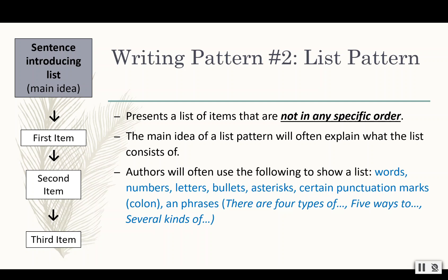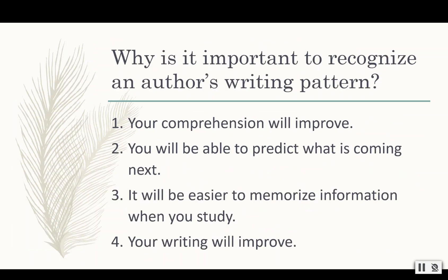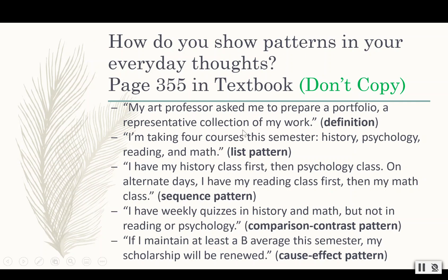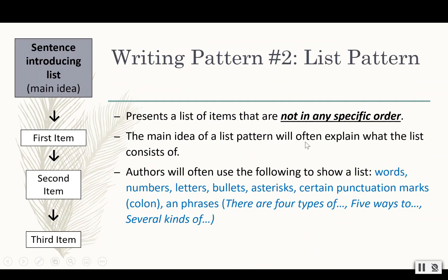They might use certain punctuation. For example: 'I'm taking four courses this semester: history, psychology, reading, and math.' Here's a grammar thing — if you need to list something, you're going to use a colon right there. They can also use phrases like 'there are four types of,' 'five ways to,' or 'several kinds of.' Your main idea is going to be what that list is about, and then you're going to have your list.